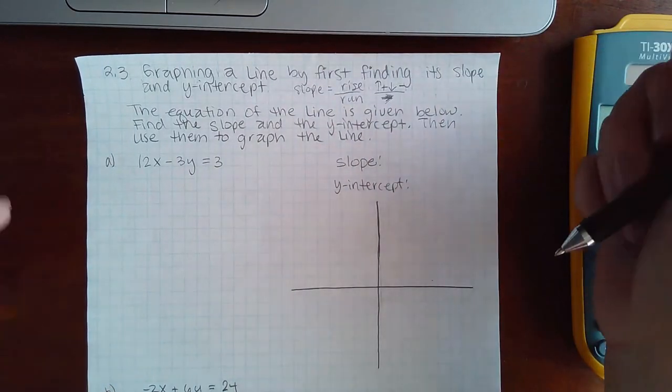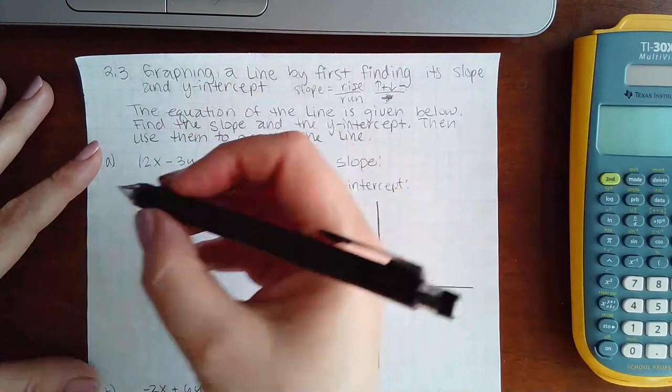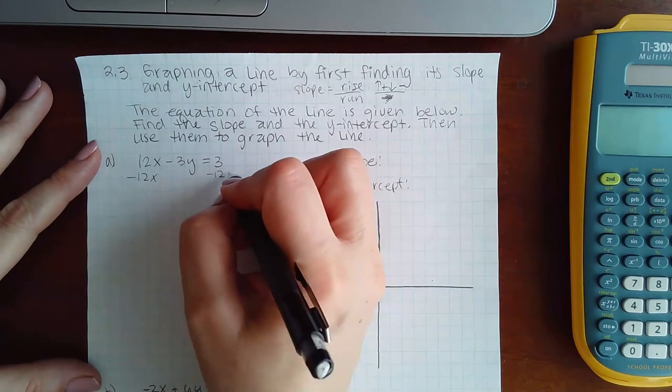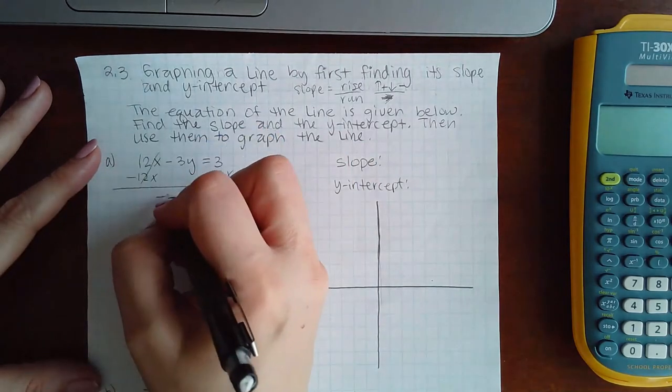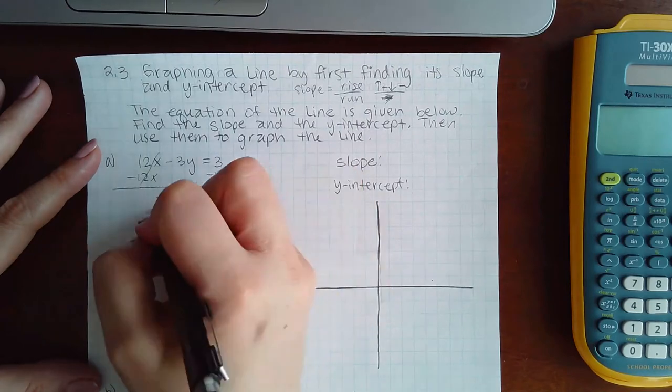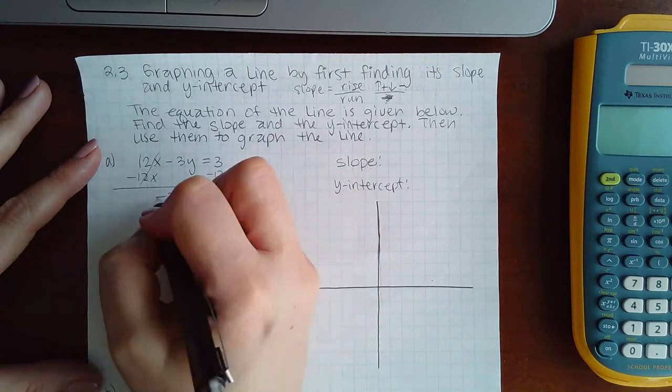Remember, if you don't have a fraction, you can make it a fraction by putting it over one. Let's go ahead and solve this for y and see what our slope and y-intercept looks like. So I get -12x and a +3, divide everybody by -3.